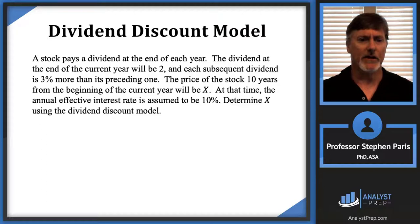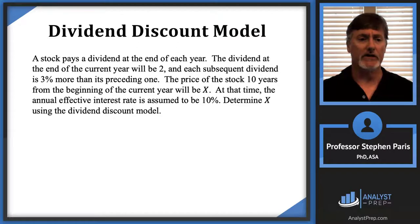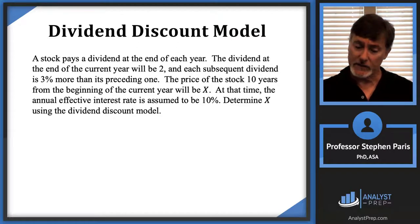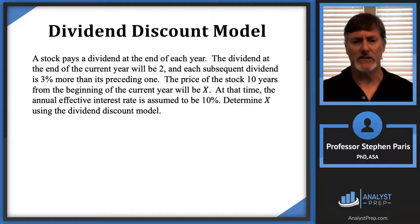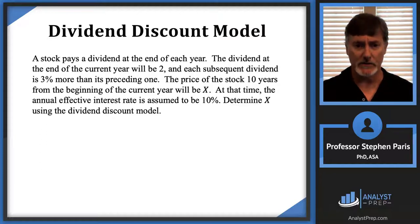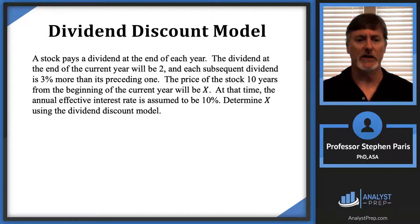A stock pays a dividend at the end of each year. The dividend at the end of the current year will be two, and each subsequent dividend is three percent more than its preceding one — so the dividends form a geometric progression. The price of the stock 10 years from the beginning of the current year will be CapX. At that time, the annual effective interest rate is assumed to be 10 percent, and we want to determine CapX using the dividend discount model.